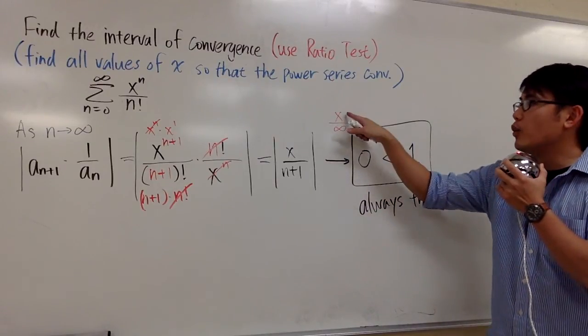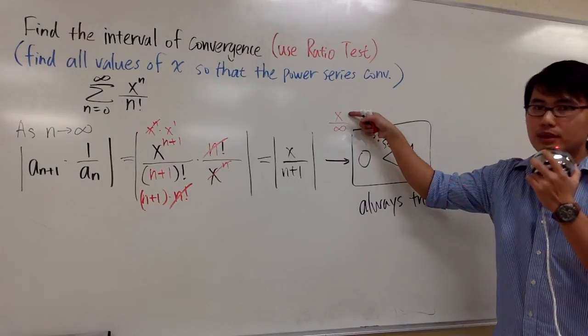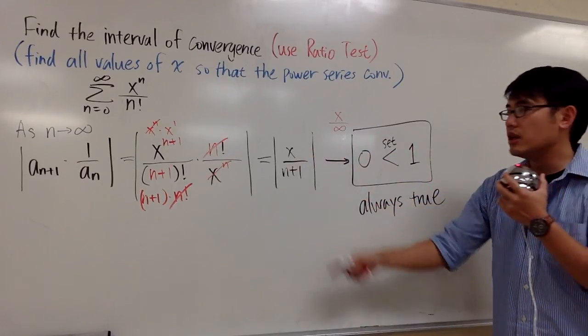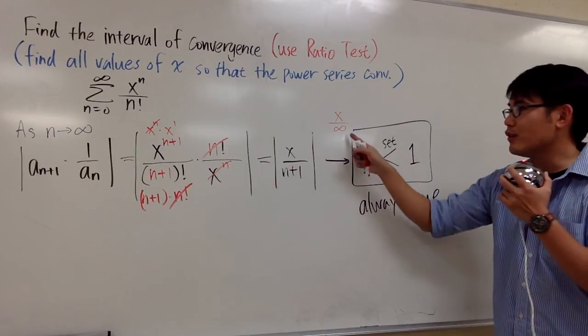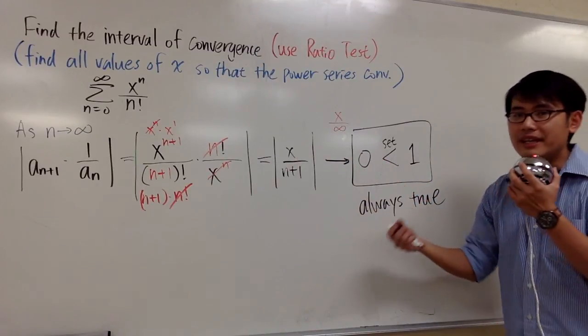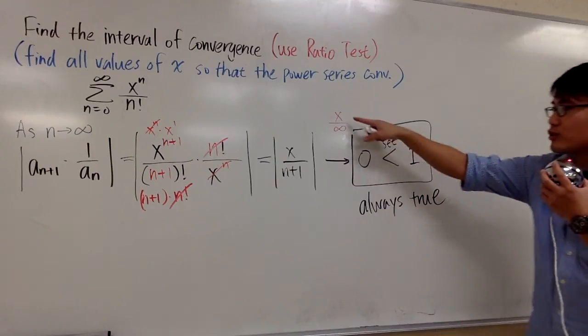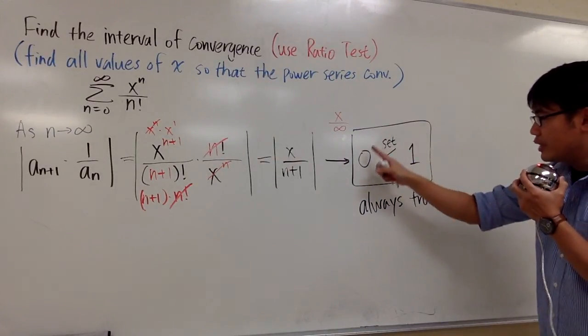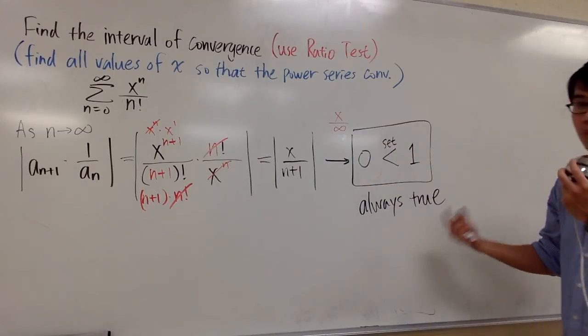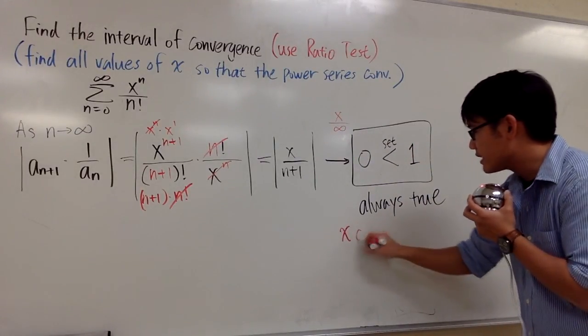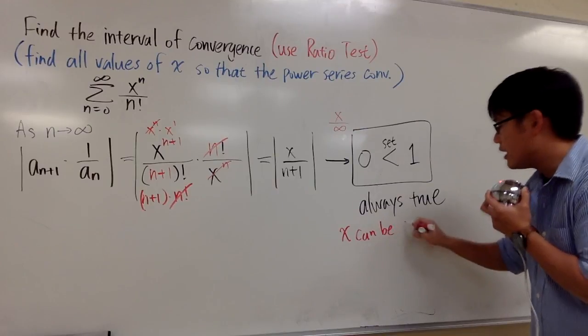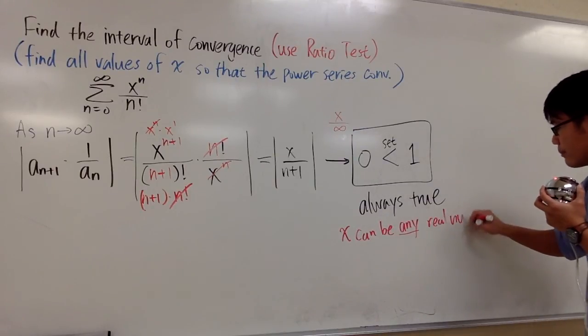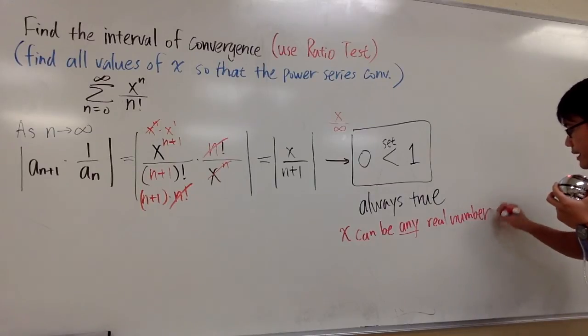This inequality is always true. It does not depend on what value of x that we are talking about. If you choose 7 earlier, 7 over infinity is still 0. If you choose, let's say, 10,000, 10,000 over infinity will still be 0. It doesn't matter what x is. It can also be a negative number if you want. When we end up with an inequality that's always true, then we know that, I will just write this down, x can be any real number. And that's the idea.